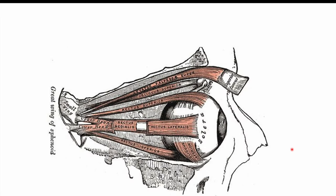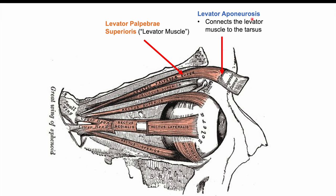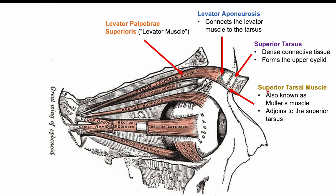Let's talk about the anatomy of the eye to better understand why ptosis occurs. There are important muscles above the eye that help open and close the eyelid. One is the levator palpebrae superioris, referred to as the levator muscle. There's also the levator aponeurosis, which connects the levator muscle to the superior tarsus — a dense connective tissue forming the structure of the upper eyelid. Another muscle is the superior tarsal muscle, also known as Mueller's muscle, which also adjoins to the superior tarsus.